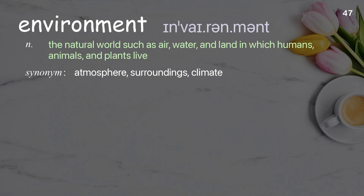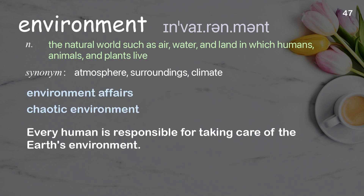Environment: the natural world such as air, water, and land in which humans, animals, and plants live. Examples: environment affairs, chaotic environment. Every human is responsible for taking care of the Earth's environment.